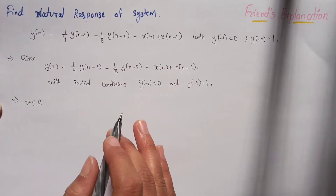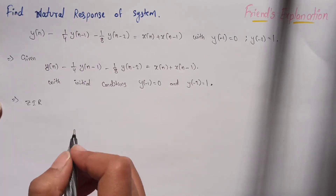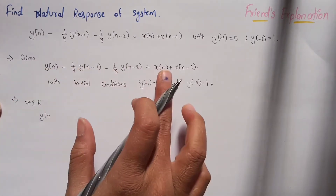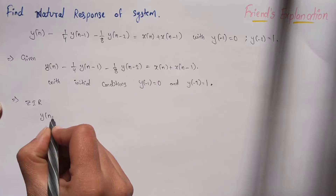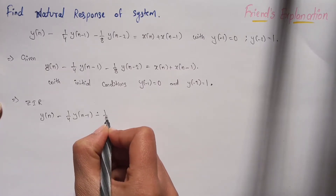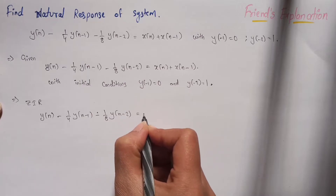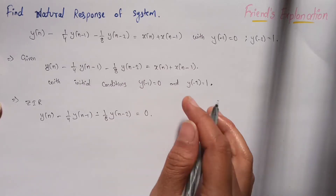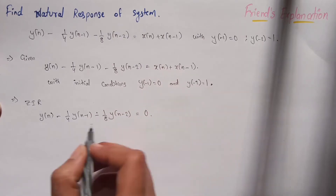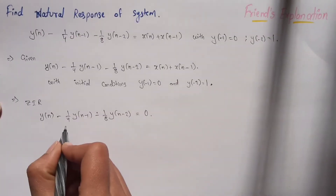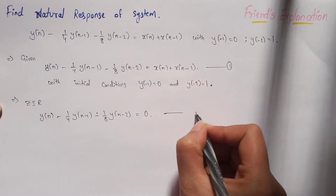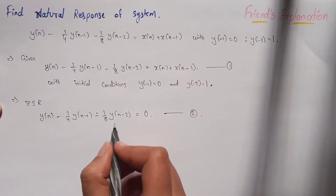To find the natural response or zero-input response, we take the input terms as zero. So we only take the y parts, not the x part. We write y(n) minus (1/4)y(n−1) minus (1/8)y(n−2) equals 0, because the input terms are set to zero. These are the output terms. Let's call this equation 2.